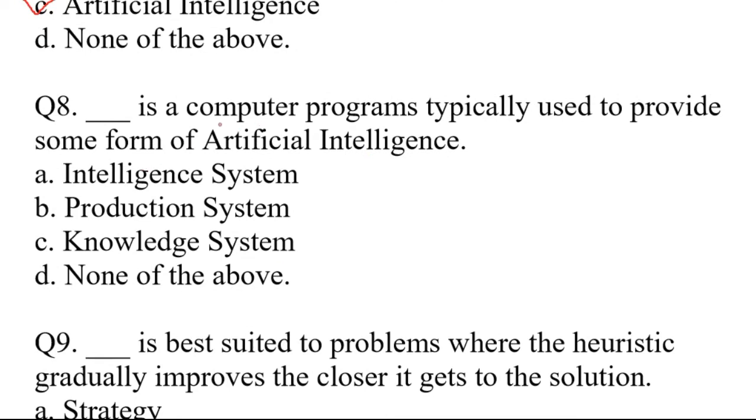Question number eight. Dash is a computer program typically used to provide some form of artificial intelligence. A. Intelligence system, B. Production system, C. Knowledge system, D. None of the above. The right answer is option B. Production system.